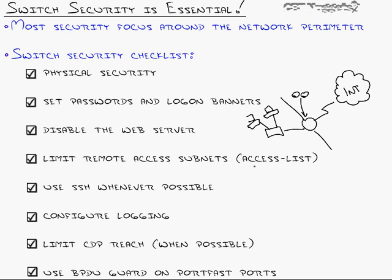Limit remote access subnets. Don't let people telnet or SSH into the switch that don't belong there. By using an access list, you can say only this IP address or subnet is allowed to telnet or SSH to the switch. Next: use SSH rather than telnet. SSH is more inconvenient — it's a pain to set up, and telnet is embedded in every operating system. You go to Windows, open a command prompt, and you've got telnet. You don't have to download PuTTY or TeraTerm to get SSH. But SSH is far more secure.